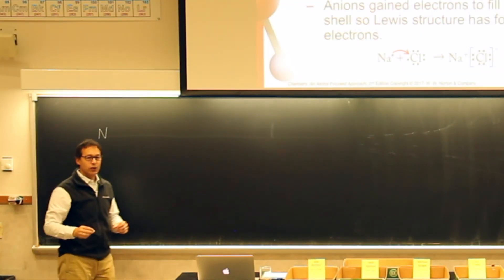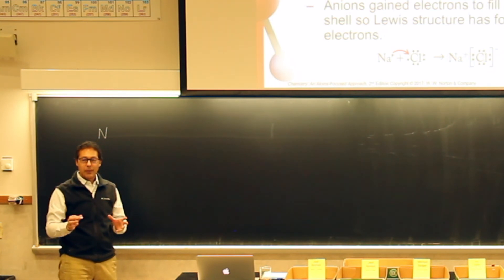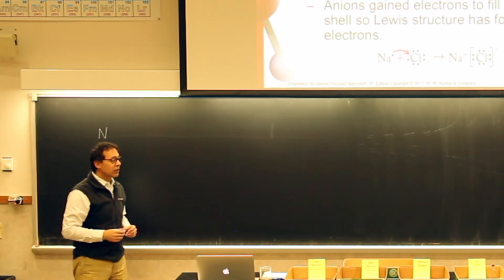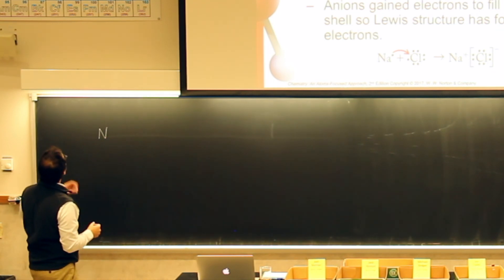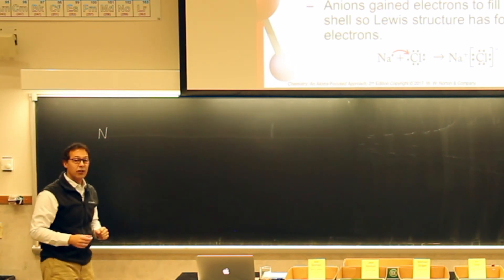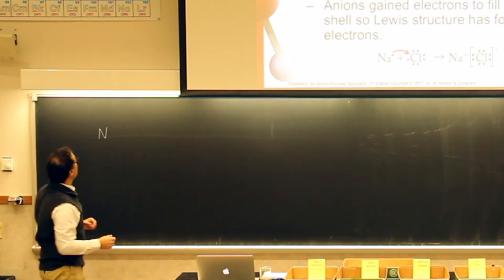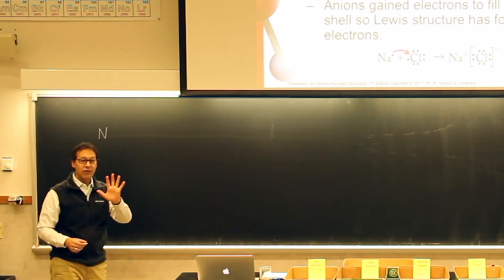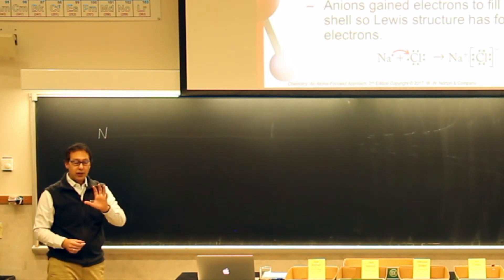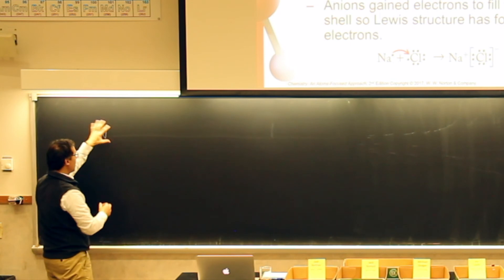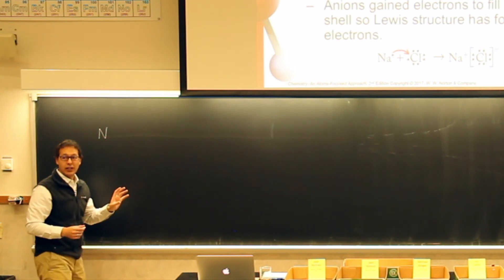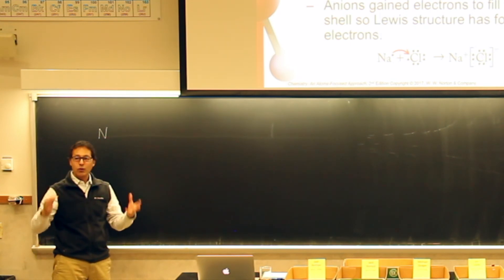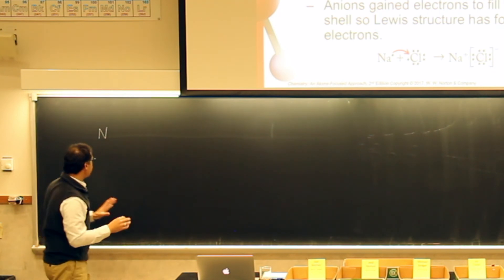We put dots around the atom that add up to the valence electrons. We look at where nitrogen is on our periodic table — it's in the second energy level. Going left to right — lithium, beryllium, boron, carbon, nitrogen — we see there are five valence electrons. There are some general rules for drawing this.